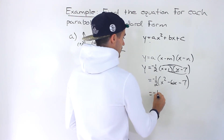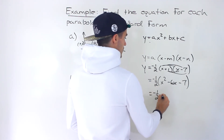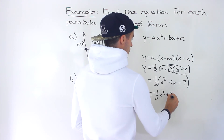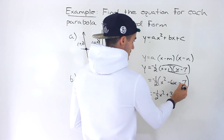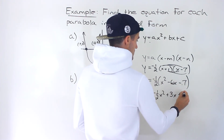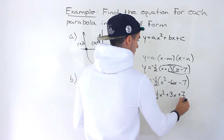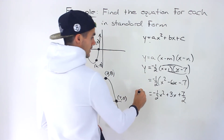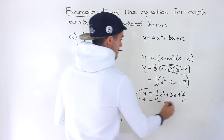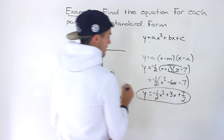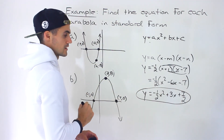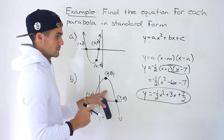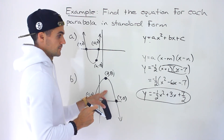Expanding to standard form with a equals negative 1 over 2: we expand x plus 1 times x minus 7 to get x squared minus 6x minus 7, then multiply through by negative 1 over 2 to get negative 1 over 2 x squared plus 3x plus 7 over 2. That is the standard form quadratic for this parabola.